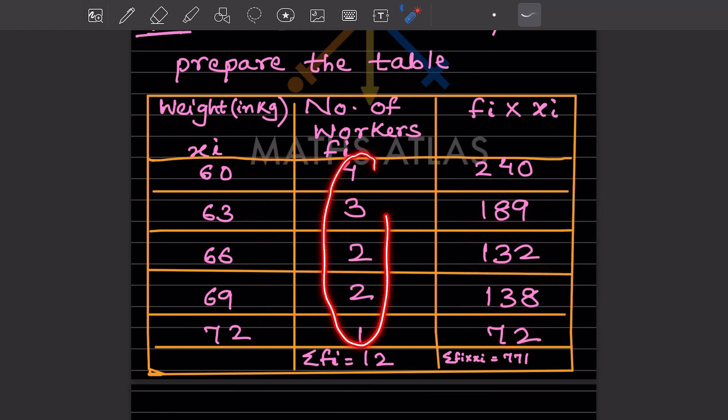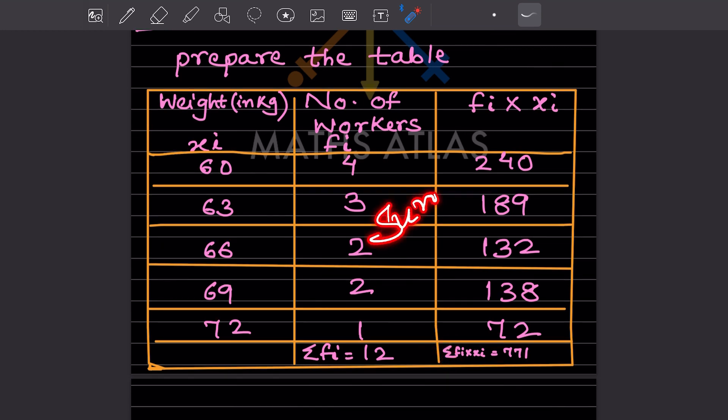Now you count the number of workers. We can write here this sign called summation, or sum of. Summation of fi is 12. And summation of fi multiplied by xi—you will add all these—equals 771.